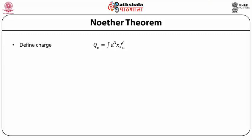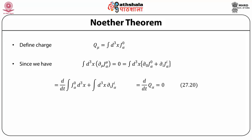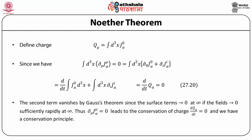We define charge Q_α = ∫d³x j⁰_α. Since ∫d³x ∂_μ j^μ_α = 0, this gives d/dt(∫j⁰_α d³x) + ∫d³x ∂_i j^i_α = dQ_α/dt = 0. The second term vanishes by Gauss's theorem since the surface term tends to zero at infinity if the field tends to zero sufficiently rapidly at infinity. Thus ∂_μ j^μ_α = 0 leads to the conservation of charge, that is dQ_α/dt = 0, and we have a conservation principle.